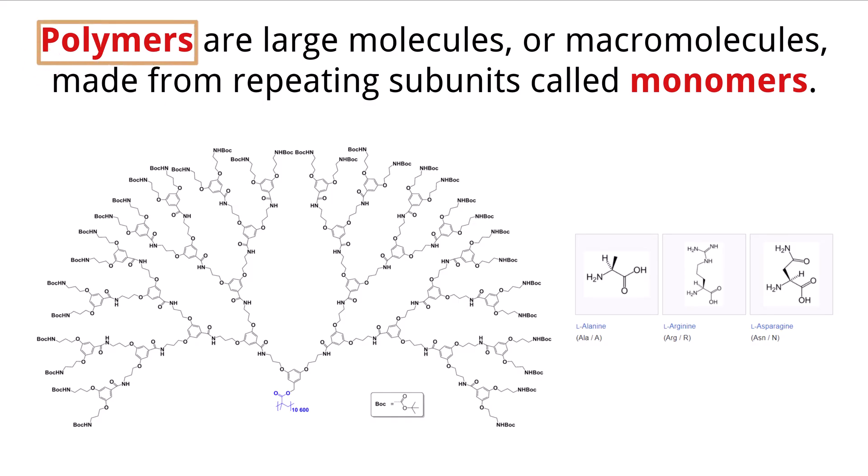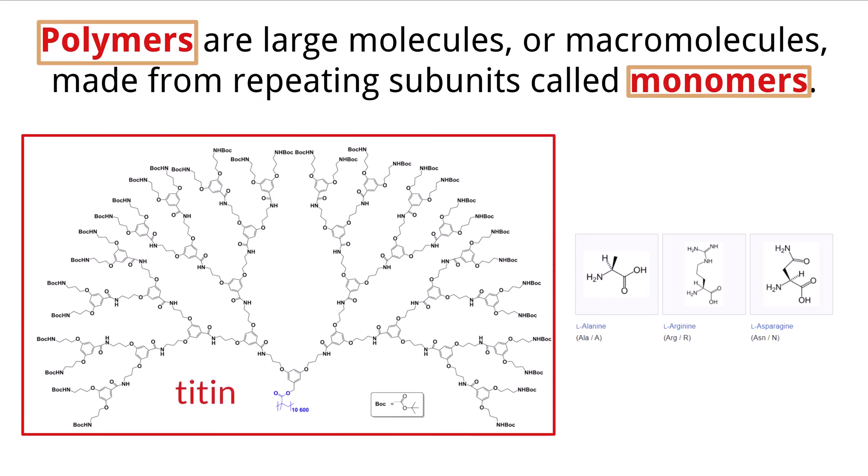Polymers are large molecules that are made up of repeating structures called monomers. Because they repeat, some polymers can be absolutely huge. The largest synthetic polymer is properly called titan and is made up of 27,000 repeating monomers. Before we discuss the details, let's make an observation.